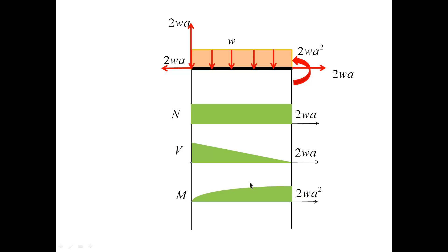The maximum value of the bending moment on this segment is simply equal to the area of this triangle, 2Wa times 2A. The base and the height give us the area equal to 2Wa squared. There are no critical points, so there is no minimum or maximum for this diagram.